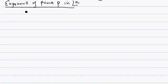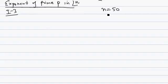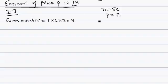Let's take illustration 3. We have to find the exponent of 2 in 50 factorial. So n is 50 and p is 2. The number 50! equals 1 × 2 × 3 × 4 × ... × 50, a product of consecutive numbers.